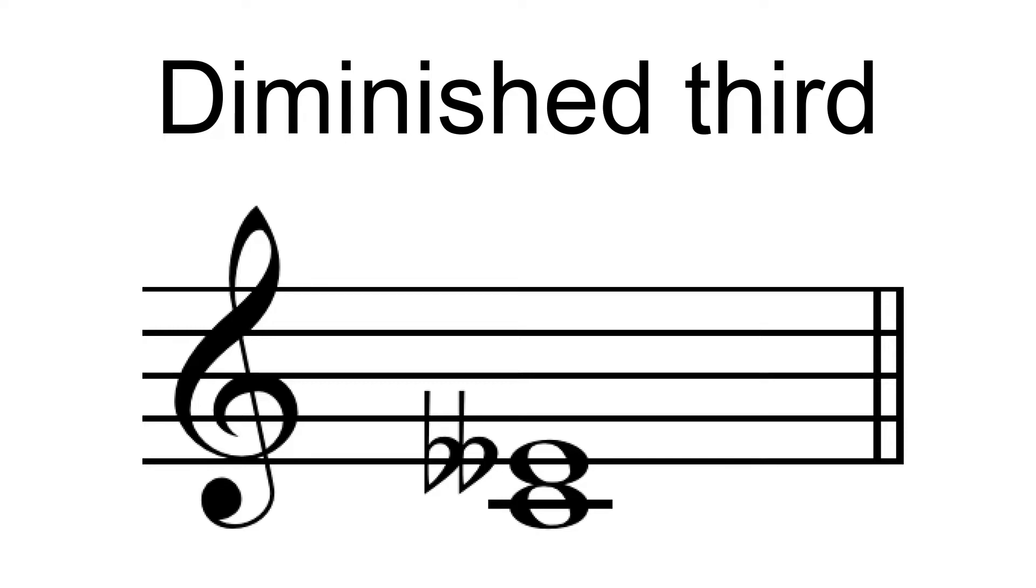Thus, 22-ET is a system in which both semitones are not in fact semitones, but the diminished third is a semitone.